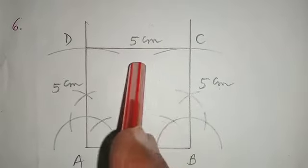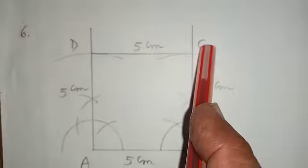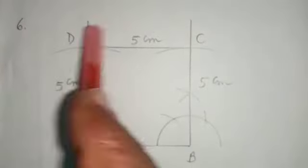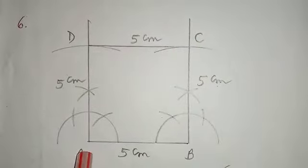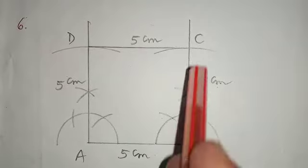Again at B, we cut an arc of 5 cm and we get a point C. Here we will get a point D. We will join C to D. We will have the required square ABCD.